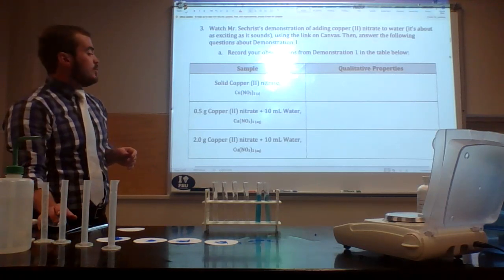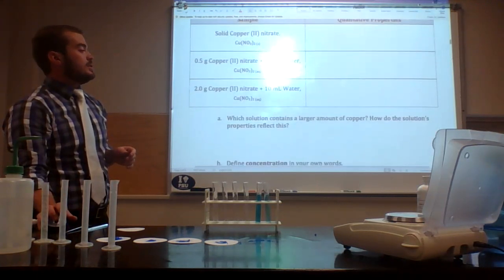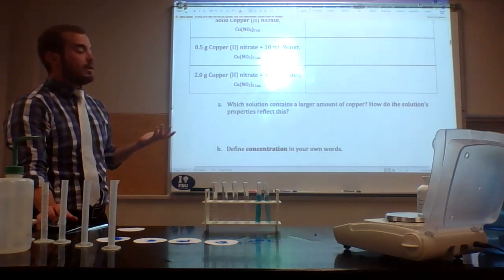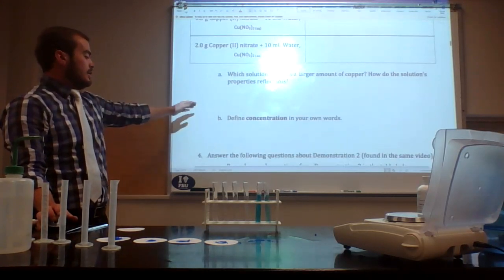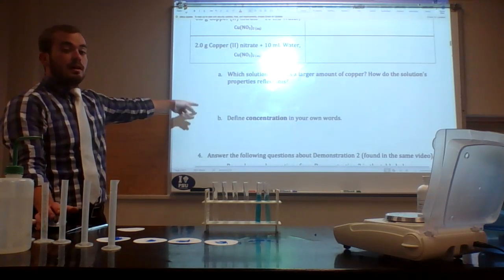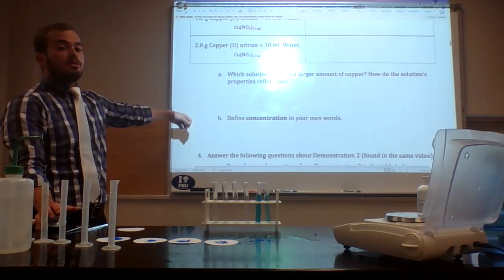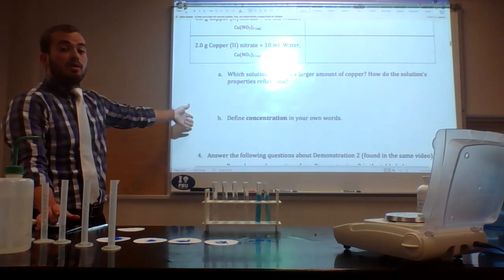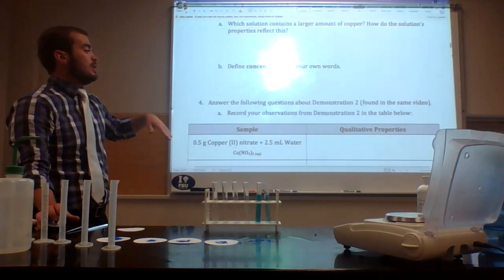As you're going through this you want to be answering the question: which solution contains a larger amount of copper, how can you tell that by looking at it, and then define concentration in your own words. To help with that, the second solution, the one with 2 grams of copper(II) nitrate, has a higher concentration. Hopefully that will help guide you to the answer or help guide your thinking.